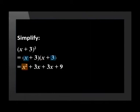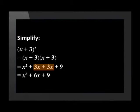The outer terms, x and 3, gives us 3x. Multiplying the inner terms, 3 and x, we again get 3x. And lastly, the last terms, 3 times 3 is 9. We add the like terms together and get x squared plus 6x plus 9.